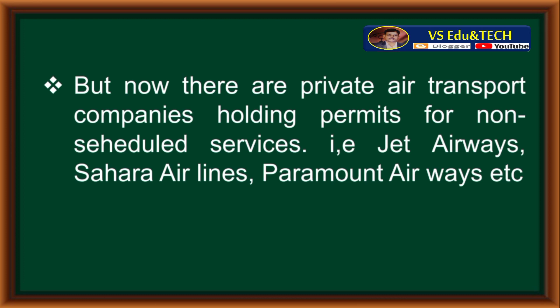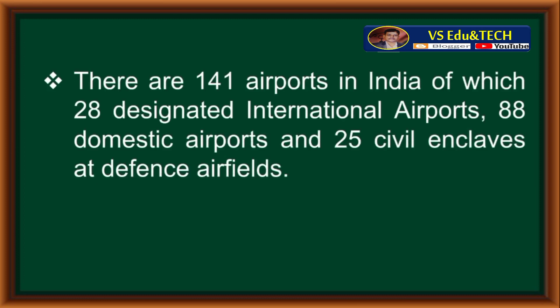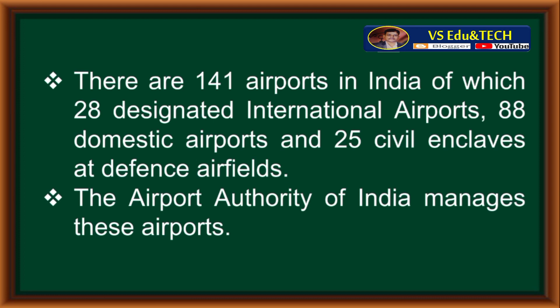Private airlines include Jet Airways, Sahara Airlines, Paramount Airways, etc. There are 141 airports in India, of which 28 are designated international airports, 88 are domestic airports, and 25 are civil enclaves at defense airfields. The Airport Authority of India manages these airports.